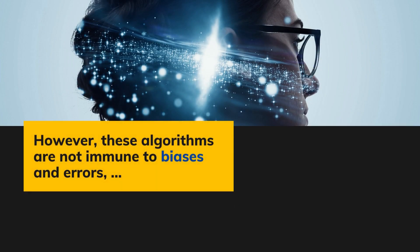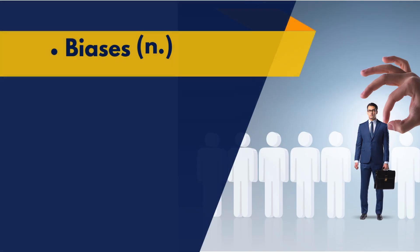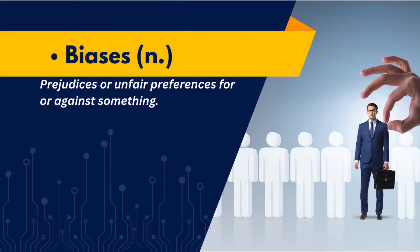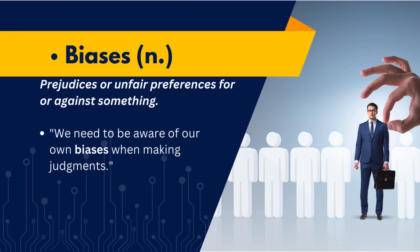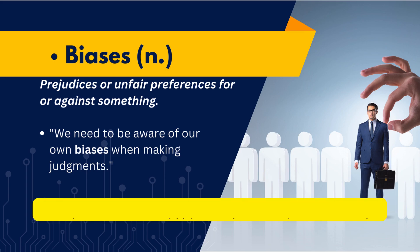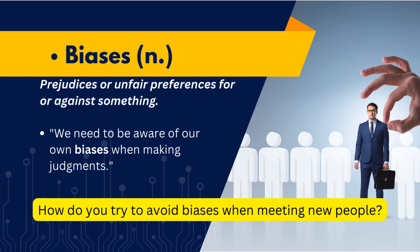However, these algorithms are not immune to biases and errors. Biases are prejudices or unfair preferences for or against something. It's important to be aware of our own biases when making judgments, as they can affect our decisions and interactions. Try to use the word and answer the question: how do you try to avoid biases when meeting new people?